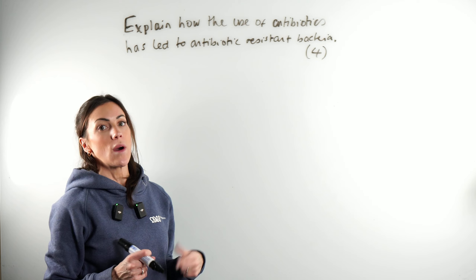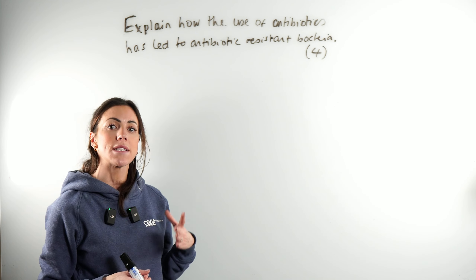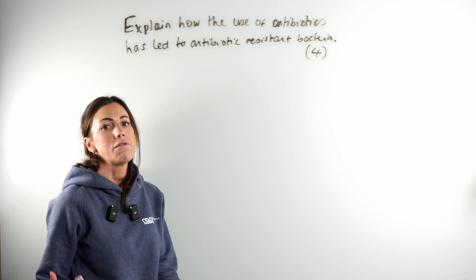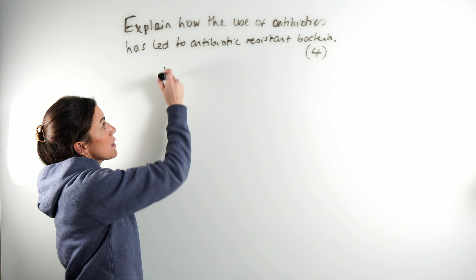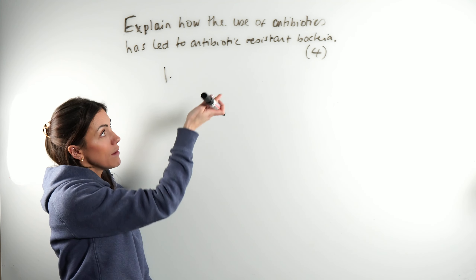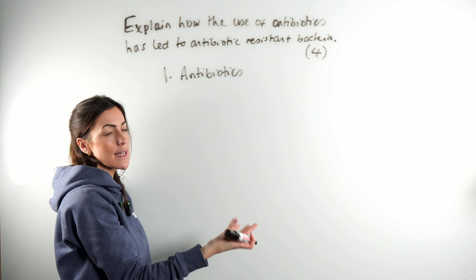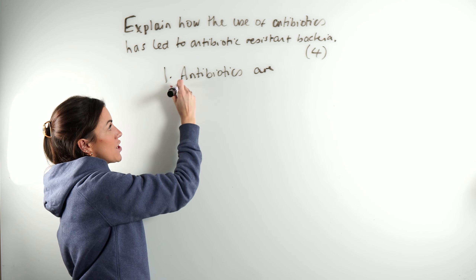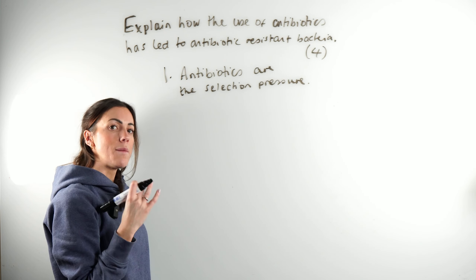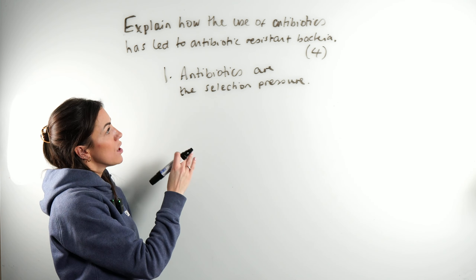Let's look at this full-mark question from A-level biology: explain how the use of antibiotics has led to the development of antibiotic-resistant bacteria. Basically, it's a natural selection question using the example of resistant bacteria. Marking point one: we need to identify the selection pressure, which is the use of antibiotics as a treatment. We call it a selection pressure because it's putting pressure on the population of bacteria.